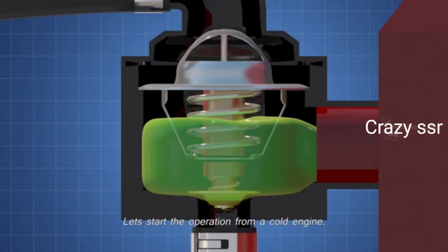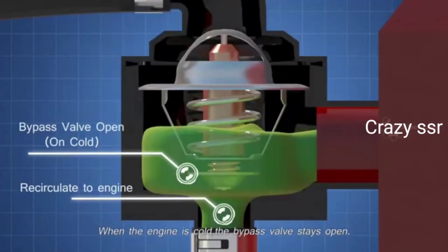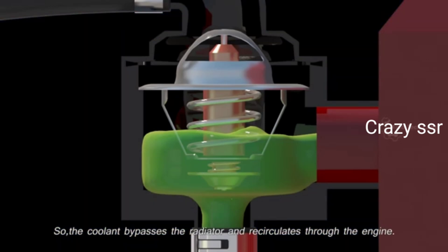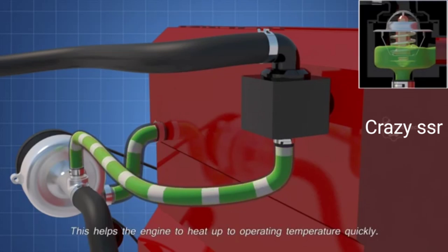Let's start the operation from a cold engine. When the engine is cold, the bypass valve stays open. So the coolant bypasses the radiator and recirculates through the engine. This helps the engine to heat up to operating temperature quickly.